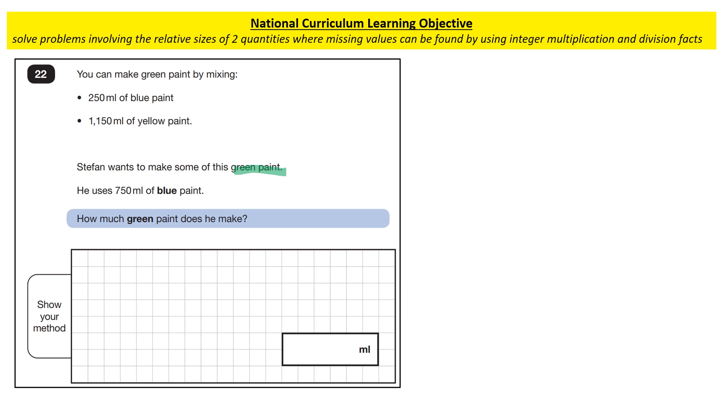This is an example of a past SATs question that involves ratio. This question comes from the 2022 paper. Let's have a look at the question.